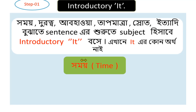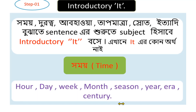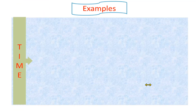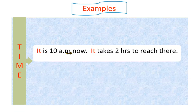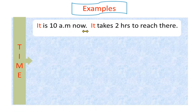First, we are taking the option of time. The smallest unit of time is an hour, then day, week, month, season, year, era, and century — all of these are units of time. To express time, we use introductory 'it'. Examples — indication of time: 'It is 10 a.m.'